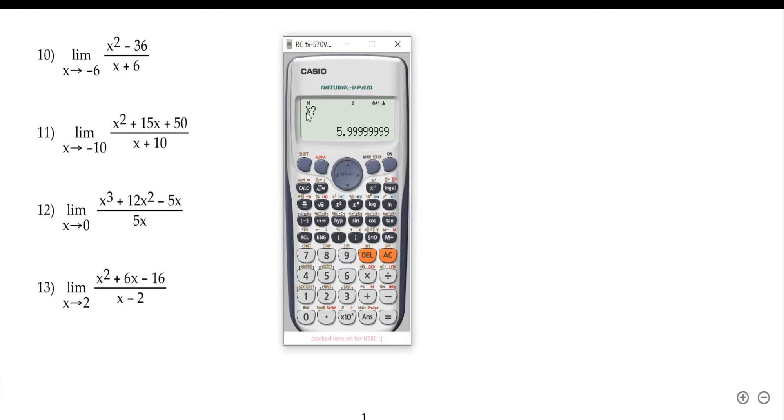It's going to ask you for what value of x. You want x approaching negative 6, so you want a value close to negative 6. A value close to negative 6 is maybe negative 6.001. So you're going to put negative 6.001.